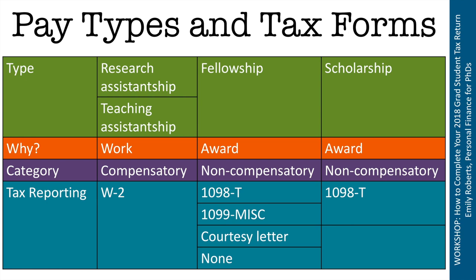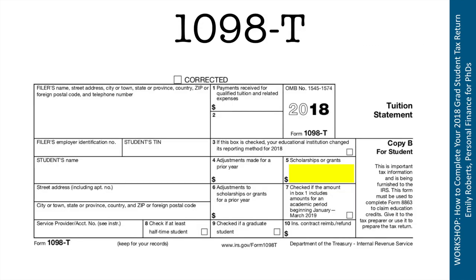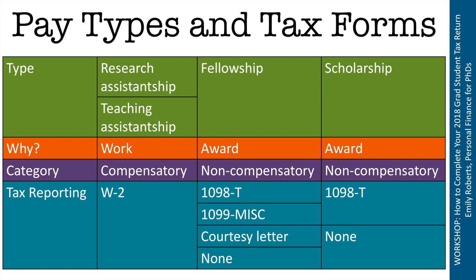Regarding scholarship income, if it shows up anywhere it will be on a 1098-T in box five. Remember, if you have a fellowship, your fellowship income might also be in box five, so you need to figure out if it's included there or not. Universities are supposed to issue 1098-Ts by default, but when box five income equals or exceeds box one — money paid toward higher education expenses — they don't have to issue a 1098-T. So for a fully funded graduate student whose fees are completely paid by scholarship, your university is not required to issue one.